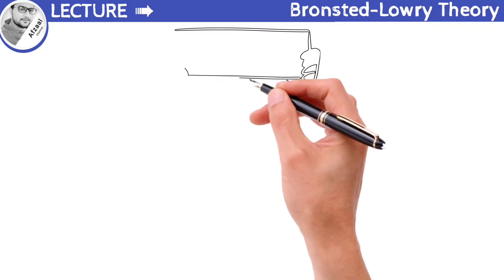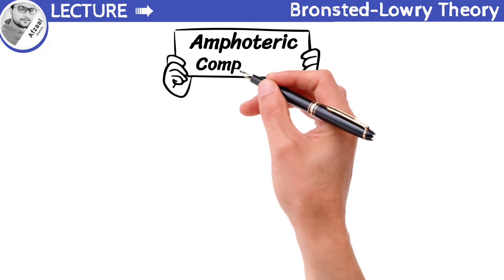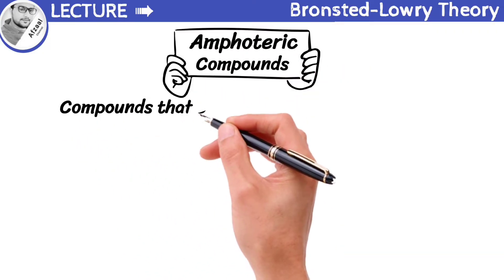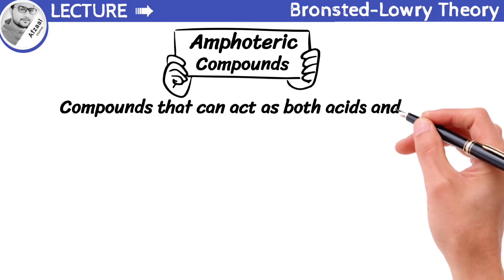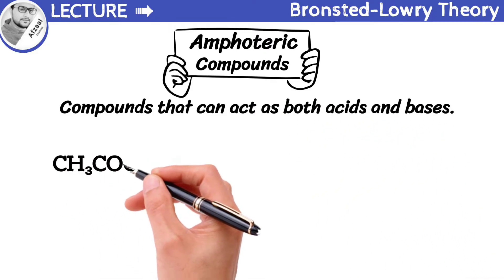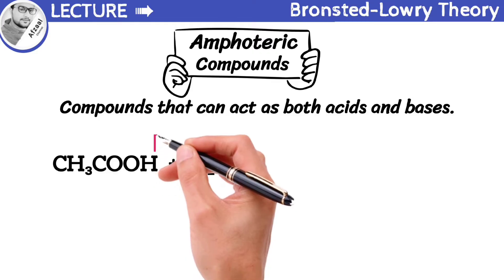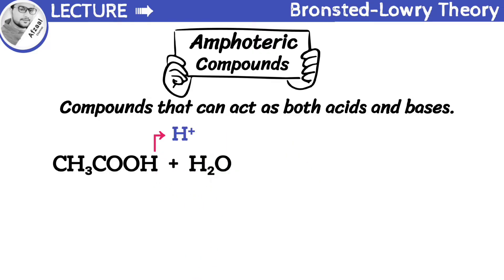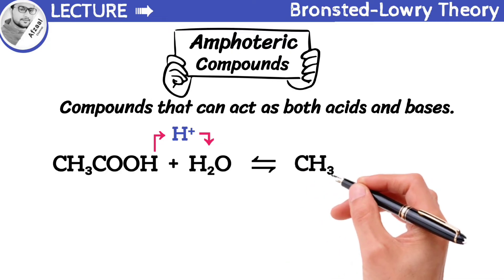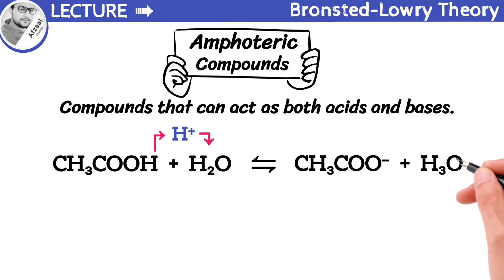Did you know my dear students what are amphoteric compounds? They are compounds that can act as both acids and bases. For example, when acetic acid reacts with water, acetic acid donates a proton to water, resulting in the formation of the acetate ion and hydronium ion. In this reaction, acetic acid donates a proton known as acid, while water accepts a proton known as base.